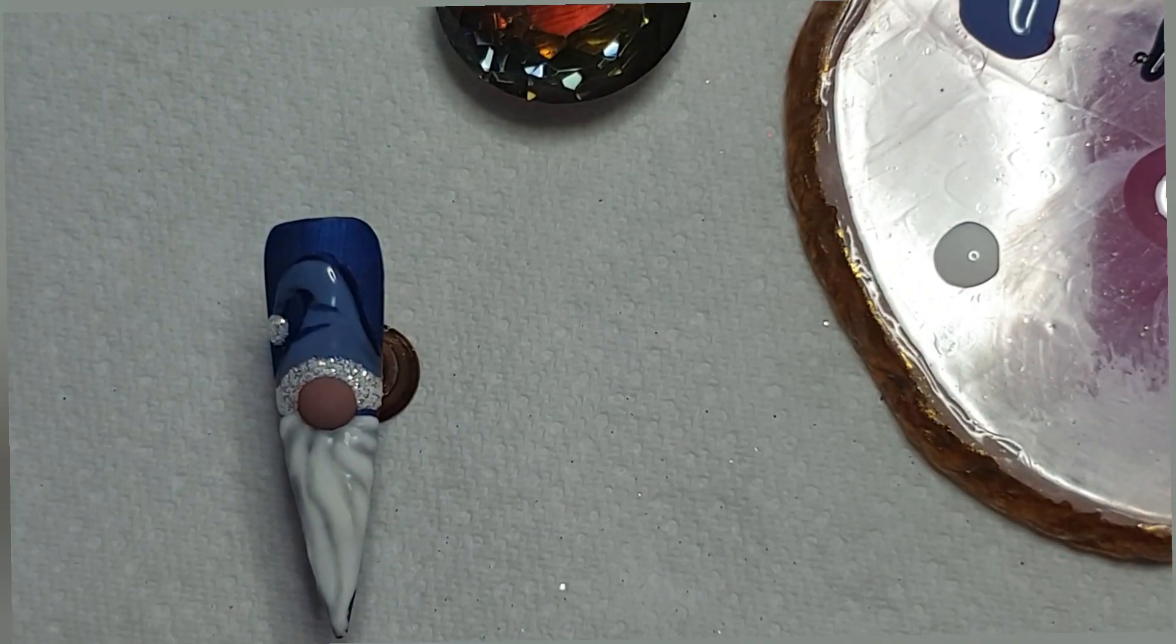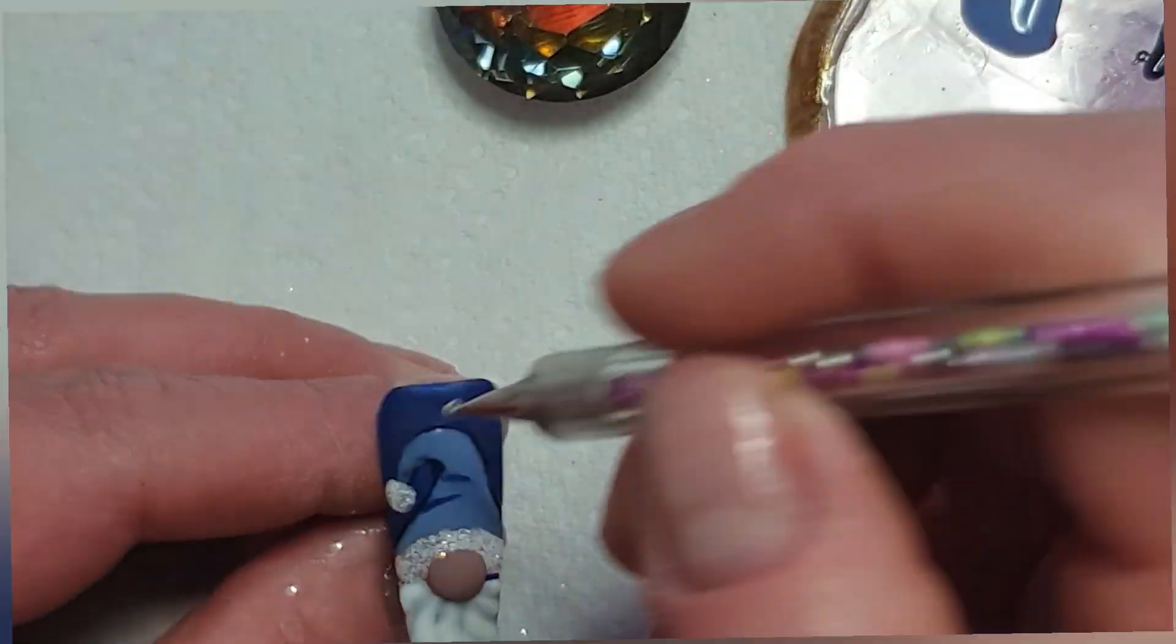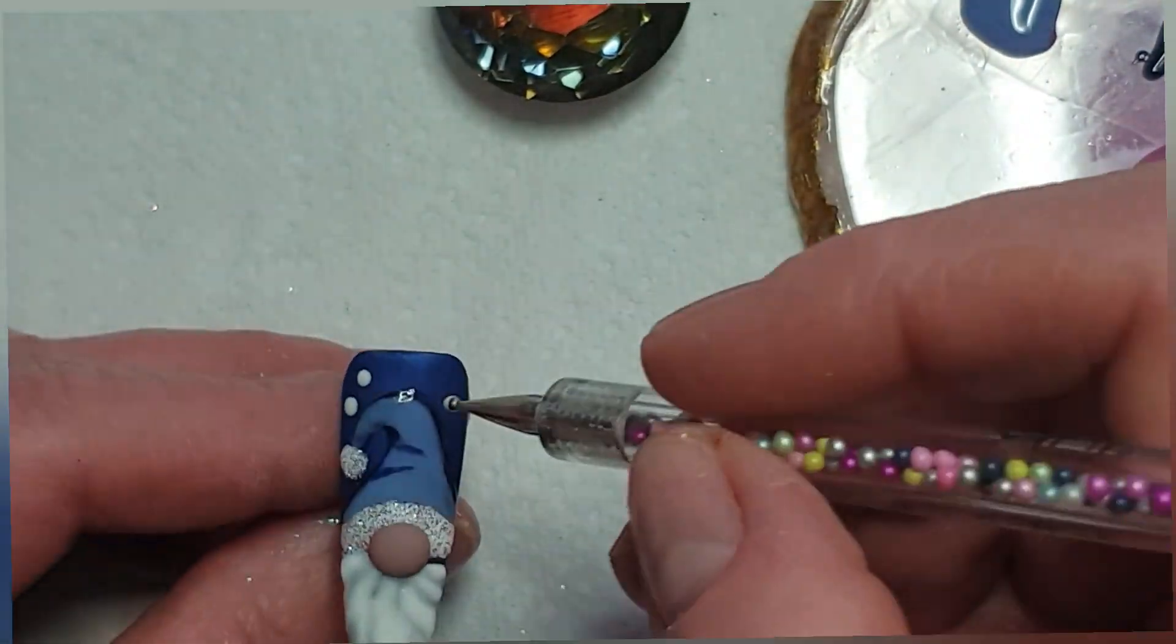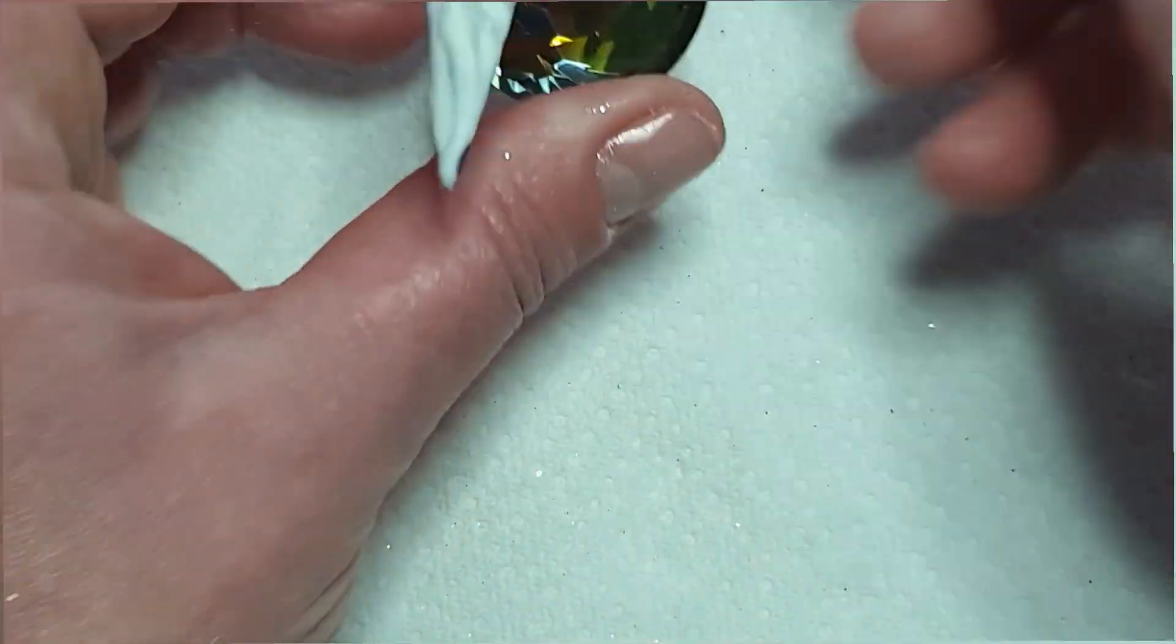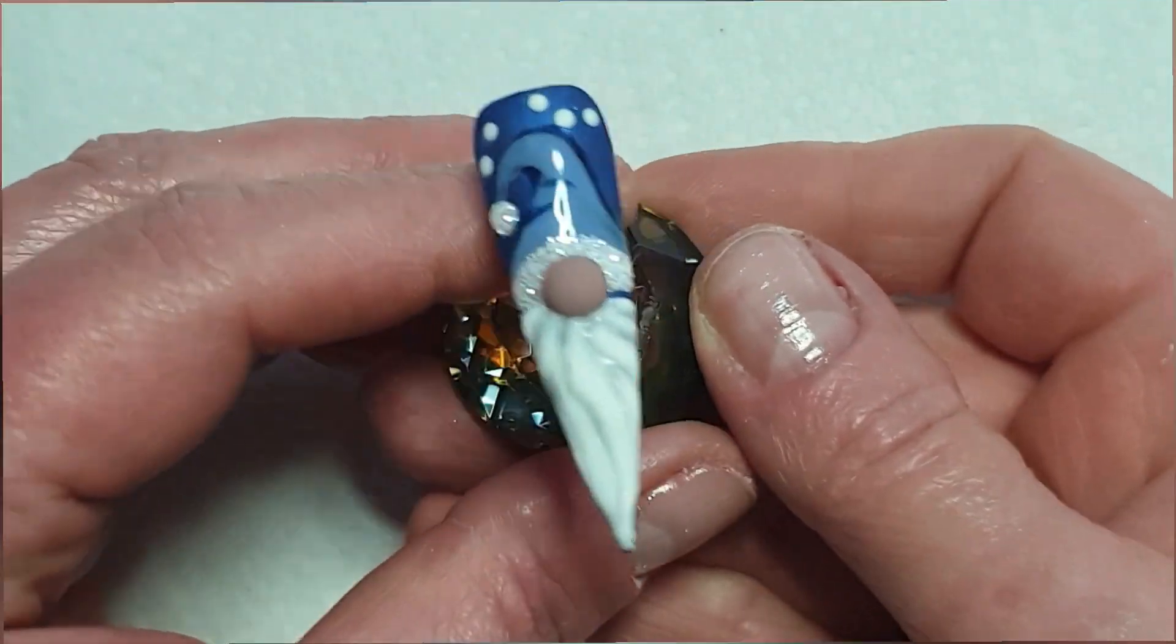And now I'm going in with the Alps gel polish. Just do a few snowflakes in the background. And there's the finished nail.